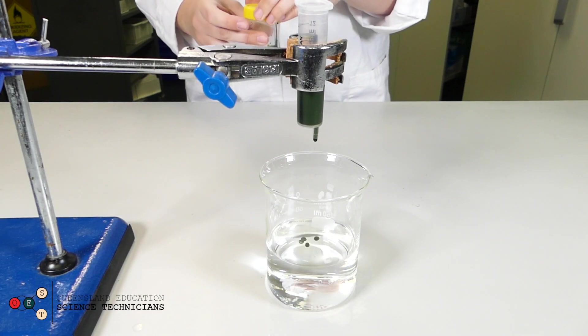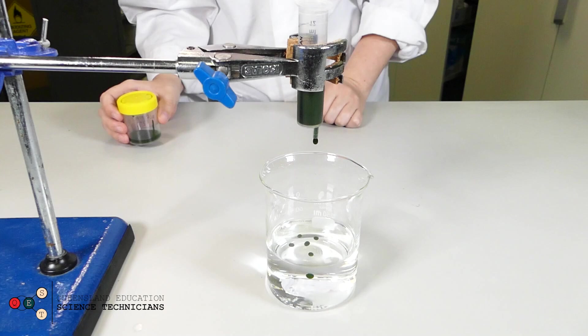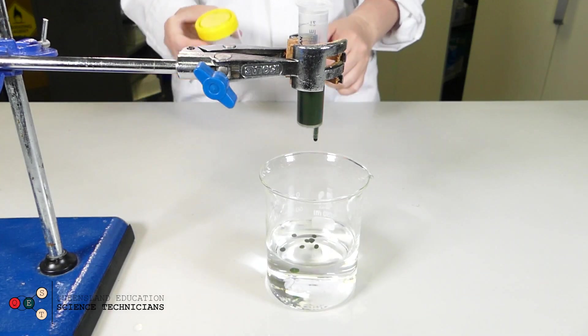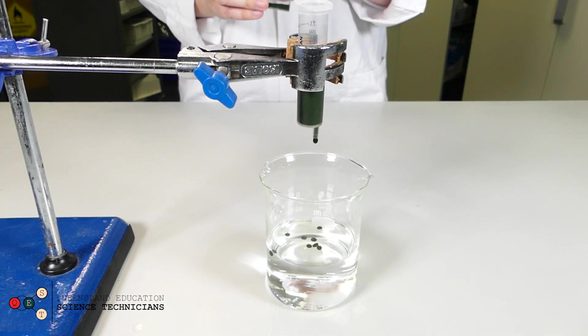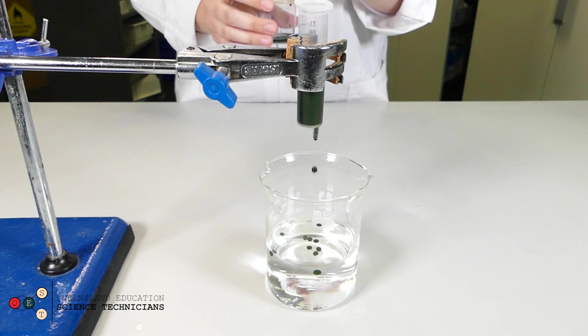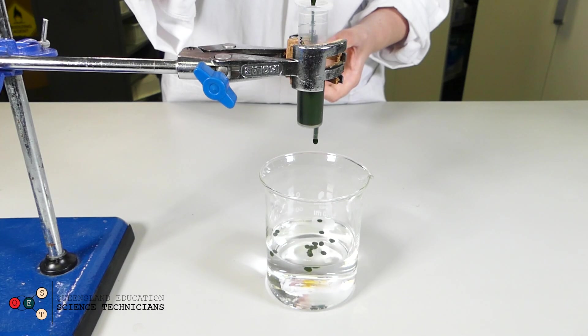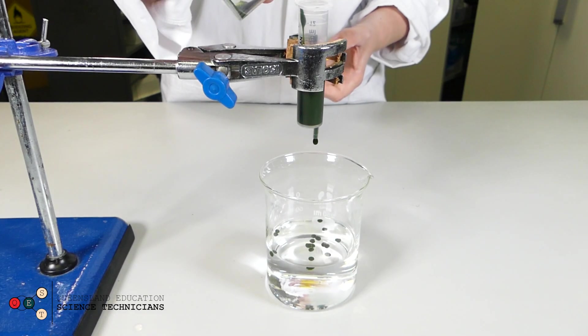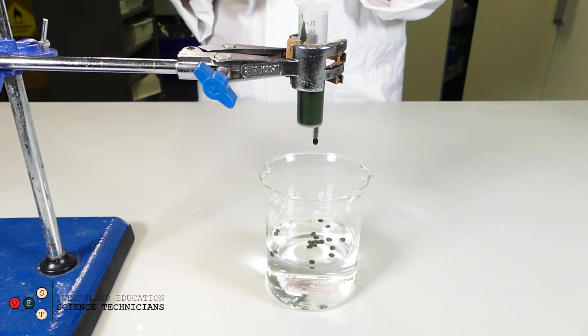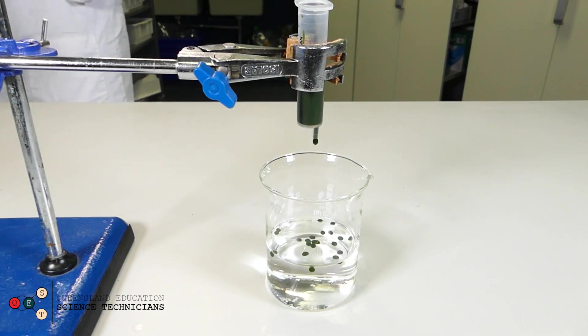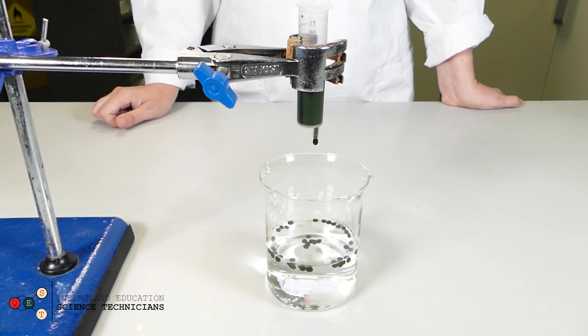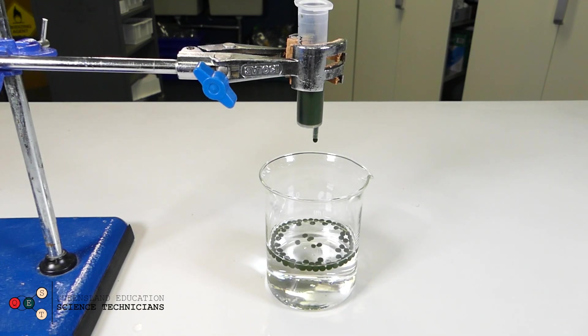You can see as it drips out of the syringe it forms perfect little balls which are immobilizing our algae ready to do experiments with. This amount of algae and sodium alginate will leave us with about 150 to 200 algal balls.